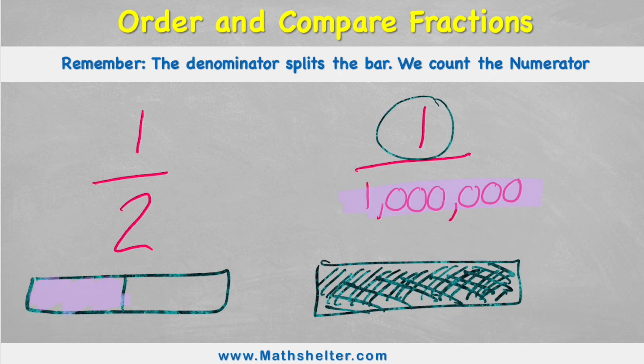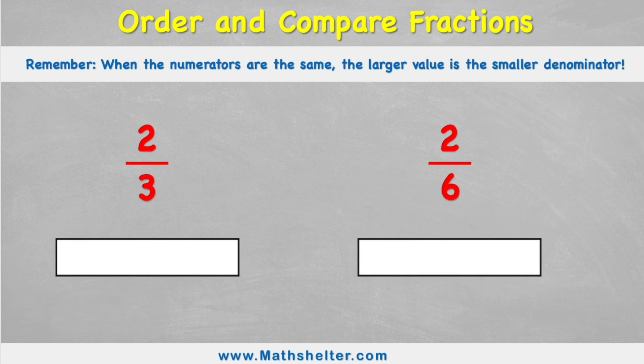So when we're ordering and comparing fractions that have the same numerator, so in this case one, but they have different denominators, the denominator that's the smaller number actually gives us the bigger fraction. That's a bit confusing, isn't it? But hopefully this has helped you understand that. Let's look at comparing these fractions.